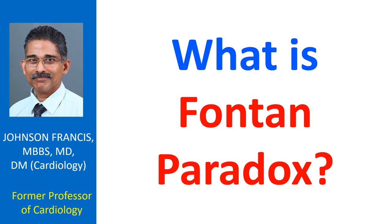According to him, in a normal biventricular circulation, the mean caval pressures are less than 10 mmHg and the mean pulmonary arterial pressure is at least 15 mmHg, to keep the pulmonary vasculature patent.